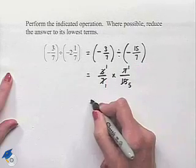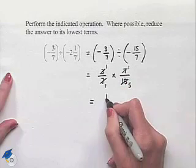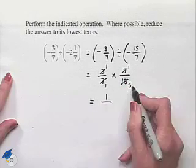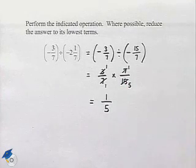And now multiplying numerators that are left, 1 times 1 is 1, and denominators, 1 times 5 is 5, gives us our result of 1 fifth.